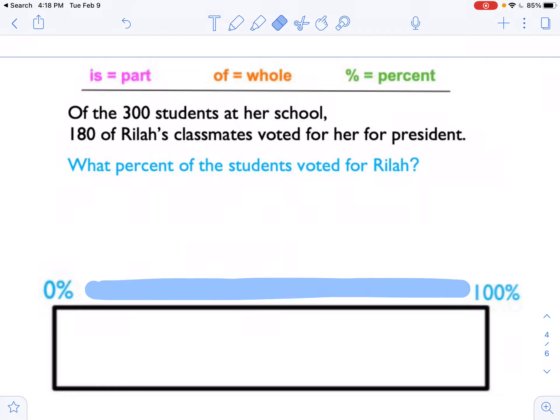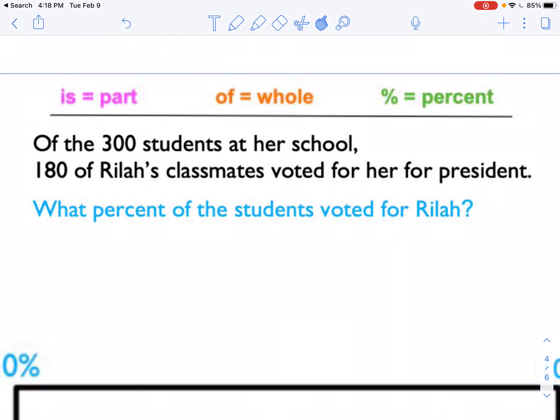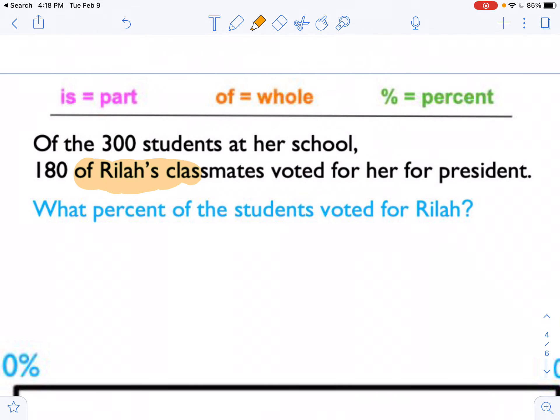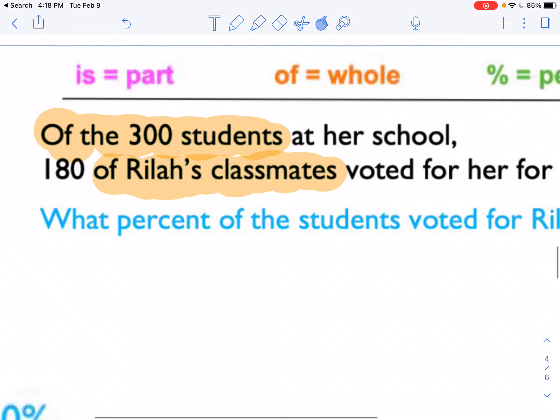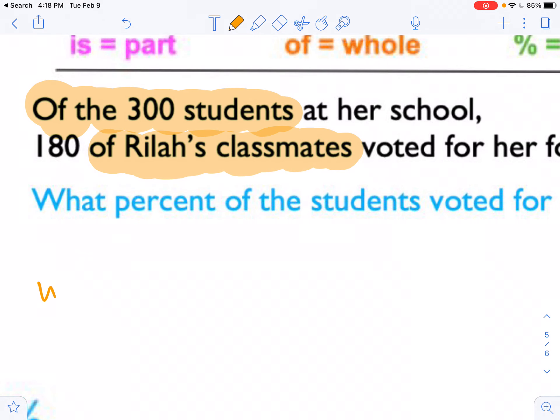However, there's two other numbers in here. There's 300 and 180. I see the word of twice. Right? I see of Rilah's classmates, and I see of the 300 students at her school. So which one is it? Is it of the 300 students or of her classmates? Well, it's actually both, because the classmates that it's talking about is the students from the previous sentence. So the whole, and remember that's on the denominator, the whole is 300.